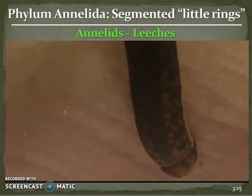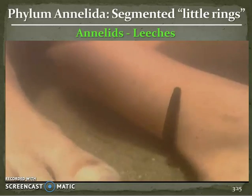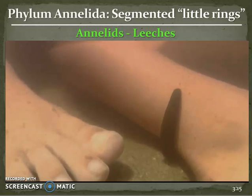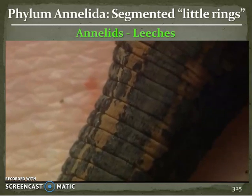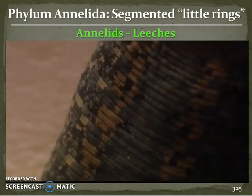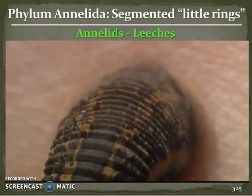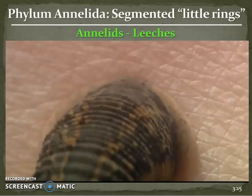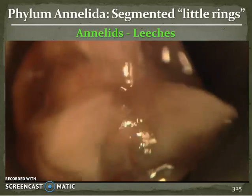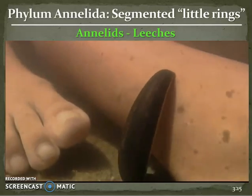Leeches have even developed the means to mask their ferocious bite. The bloodsuckers have an anesthetic that they inject into their victims, allowing them to suck the blood without being noticed. This leech is equipped with three saw-like jaws that tear into flesh, enabling it to gorge itself - sometimes taking in ten times its own body weight in blood.